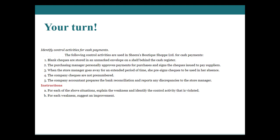The purchasing manager personally approves payments for purchases and signs the checks issued to pay suppliers. The approval of and payment to suppliers is done by the wrong person. There needs to be an assignment of responsibility and segregation of duties. The purchasing manager should not approve bills for payment, nor have signing authority. An employee other than the one involved with purchasing, who is aware of delivery of goods and services, should authorize the payment. Another senior management member should be assigned check-signing duties.